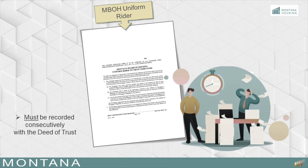Attached to the deed of trust is the MBOH uniform rider and other riders as appropriate for the property. The MBOH community land trust rider must be executed by the borrower and recorded along with the ground lease. This form removes resale restrictions as well as any other restrictions that may be included in the ground lease that could affect the value of the property from the community land trust ground lease.